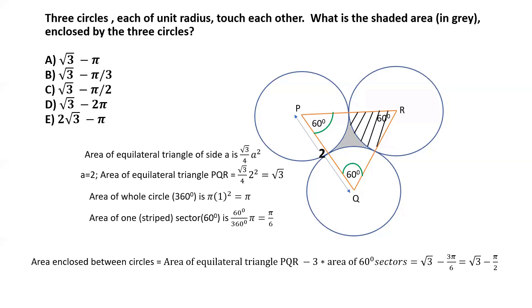Which comes to root over 3 minus pi by 2. So going through all the options, the correct choice in this case would be option C, root over 3 minus pi by 2.